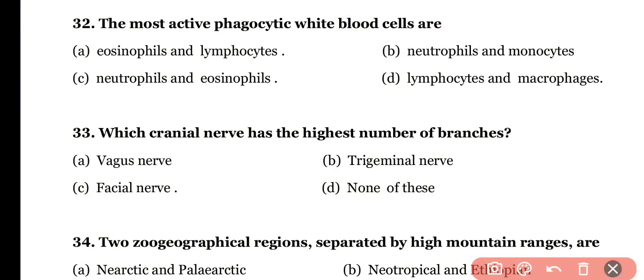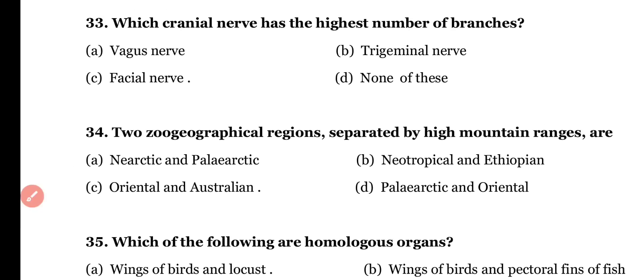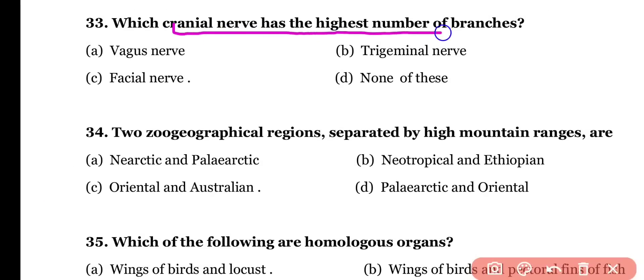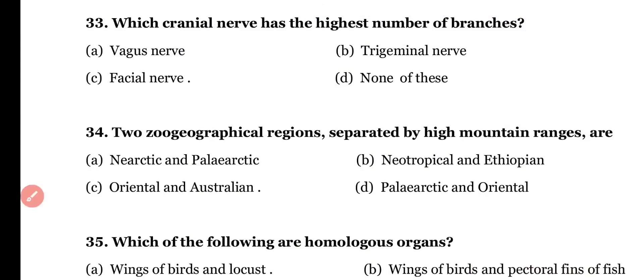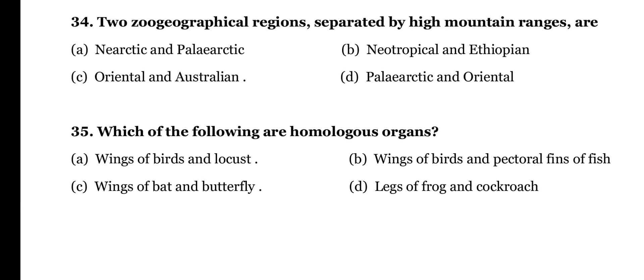Question number thirty-three: which cranial nerve has the highest number of branches — (a) vagus nerve, (b) trigeminal nerve, (c) facial nerve, or (d) none of these? The correct answer is option A — the vagus nerve has the highest number of branches in our body.